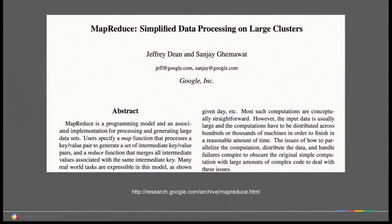Going back down memory lane, one of the seminal moments in large-scale processing was the publishing of MapReduce. That was a pattern we had been using internally at Google to do what Google was doing back then: mostly indexing the web and collecting and analyzing logs from a large number of servers in a manageable way. It was very productive and made Google successful in those early days.